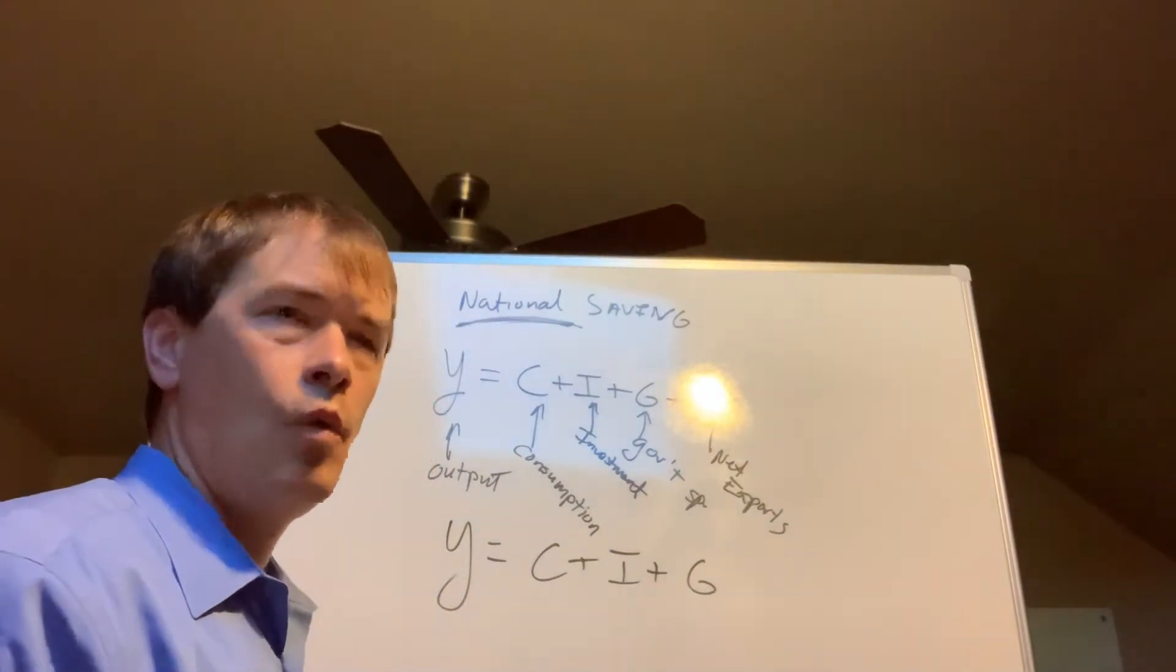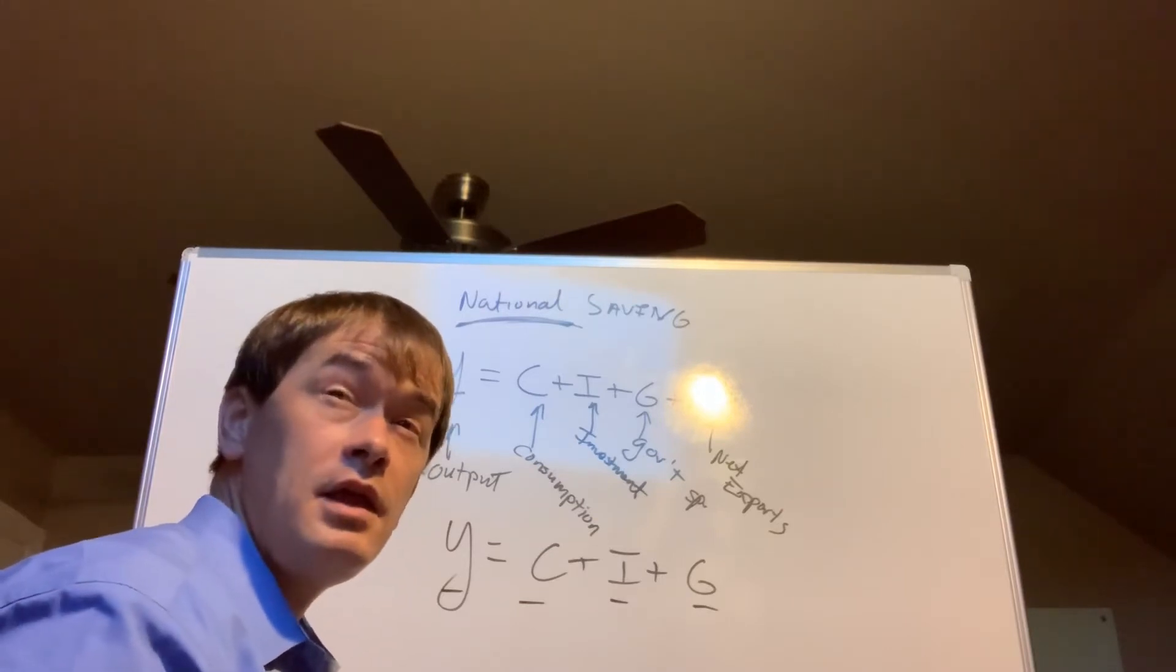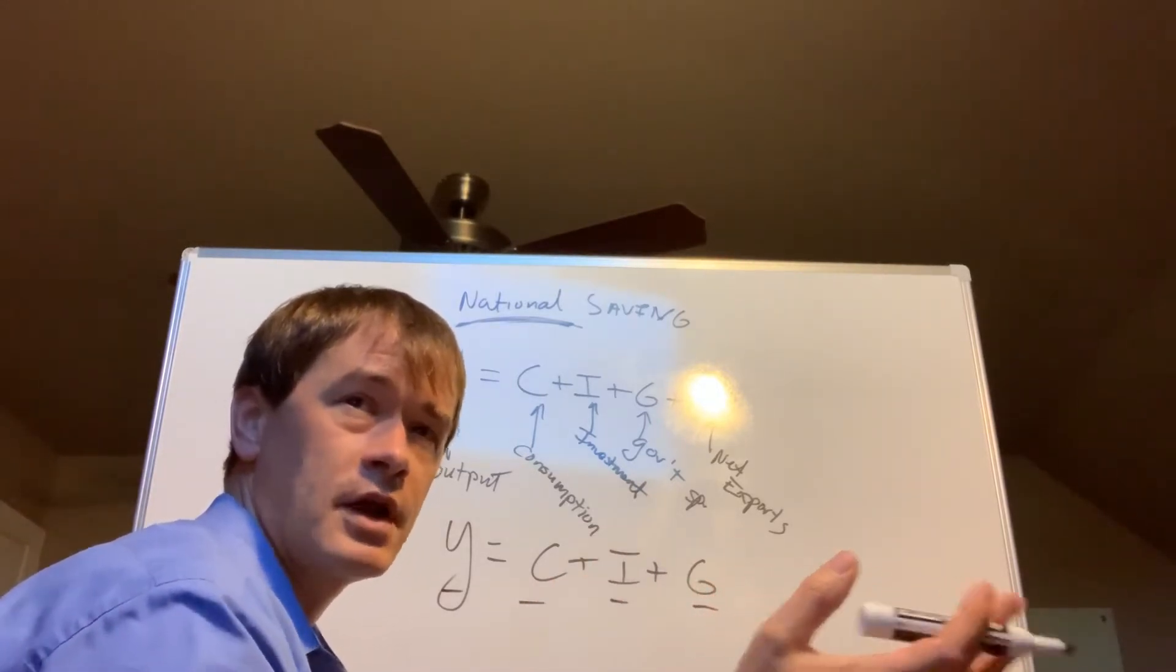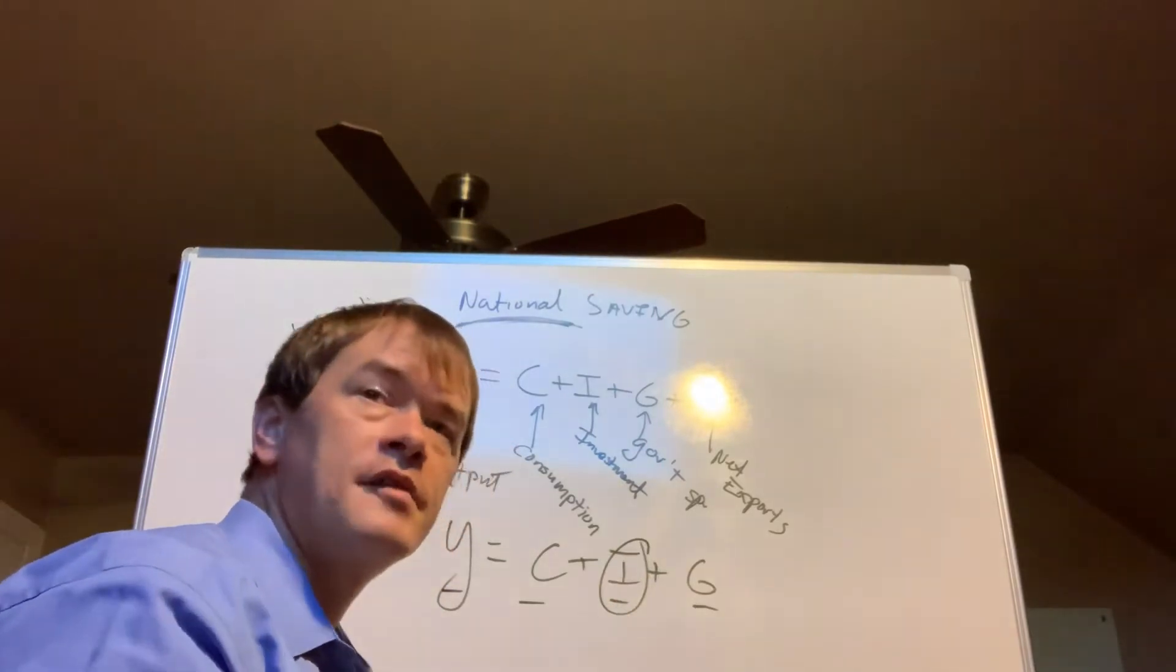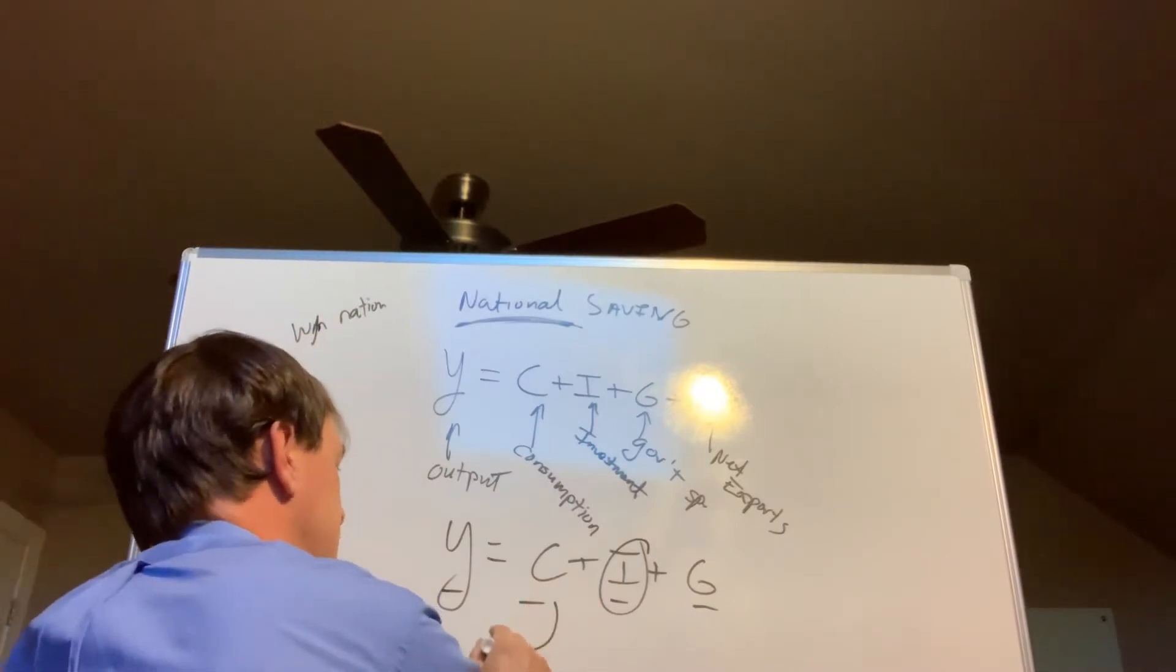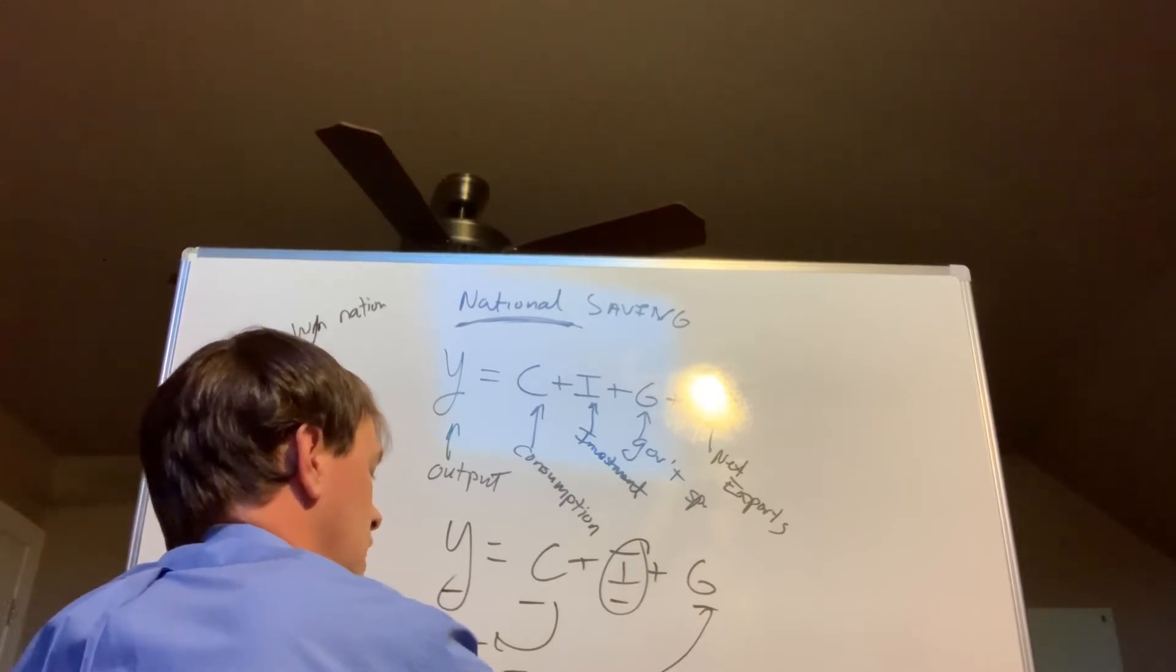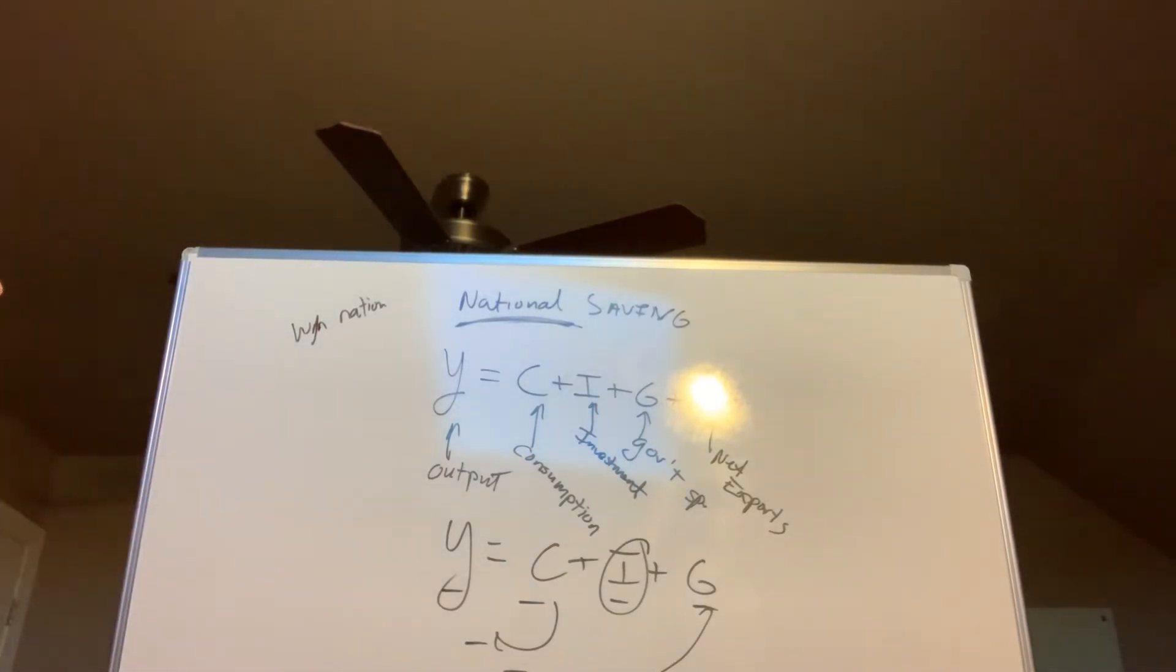Now, which one of these is most closely tied to saving? Well, I'll tell you what. Consumption, you're not going to save that. Government spending, you had to pay taxes on that, so that's money going out of your wallet. Consumption, that's money going out of your wallet. Output, that's stuff you buy, so that's not money coming in your wallet. But the one that we're interested in here that relates to saving is actually investment. So let's solve for investment. If we bring over C, we bring over G, we can rearrange it as I equals Y minus C minus G.